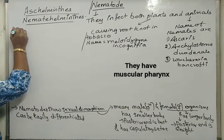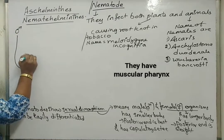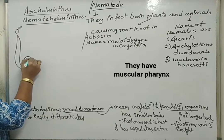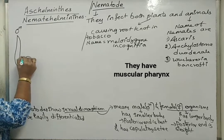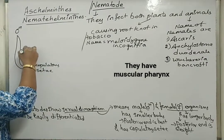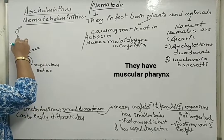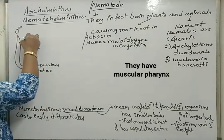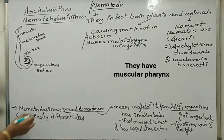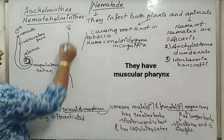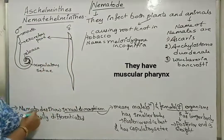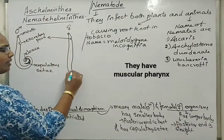In the diagrammatic representation of the male, the posterior end is bent, with a copulatory spicule and an opening called the cloaca. The anterior position has an excretory pore and a mouth. The female nematode's body is longer than the male's. It has an excretory pore at the anterior position, a mouth, and a genital pore.